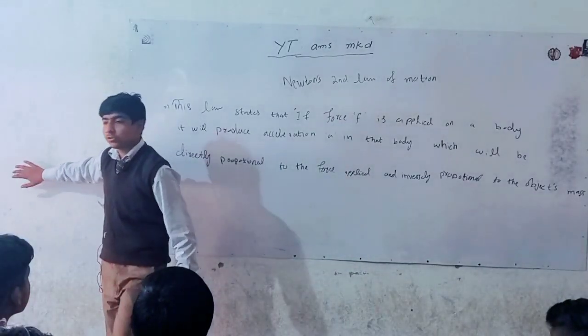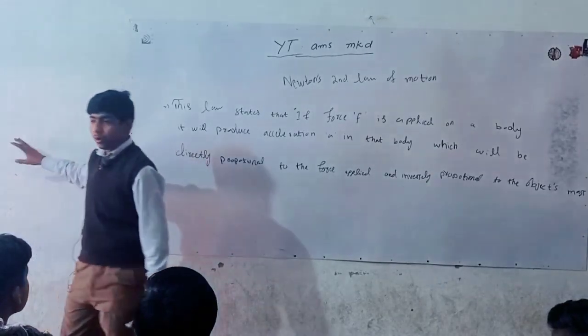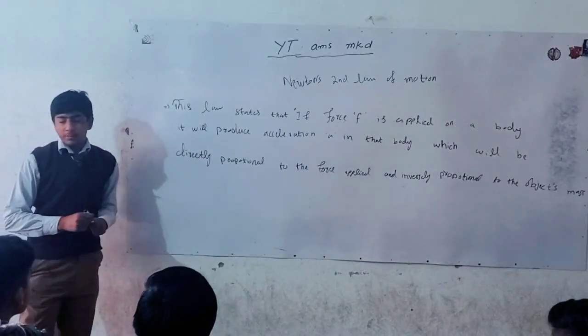For example, if I try to apply force on this wall, it will not move because the acceleration will be inversely proportional to its mass, and its mass is too high for me to move it. Now we have to write its mathematical form.